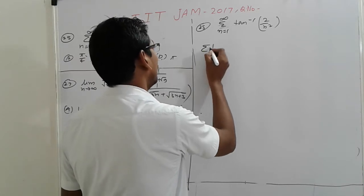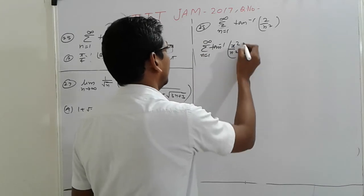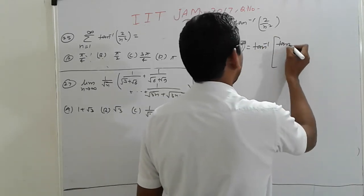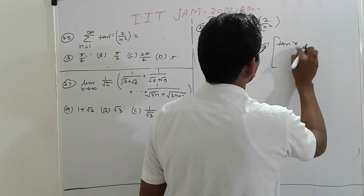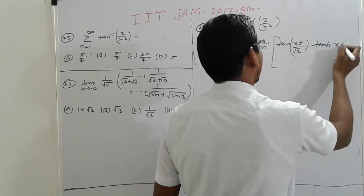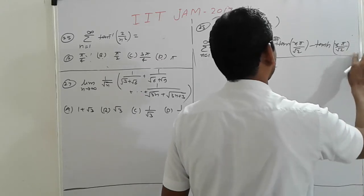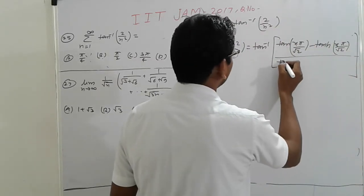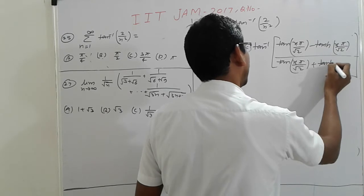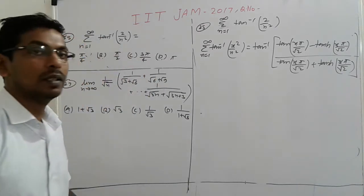Simple friends, the formula is: if tan inverse, summation n equal to 1 to infinity x square upon n square, we get tan inverse of [tan inverse(x pi upon root 2) minus tanh(x pi upon root 2)] divided by [tan(x pi upon root 2) plus tanh(x pi upon root 2)]. That is the formula.